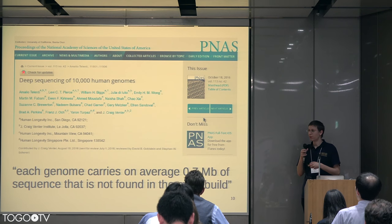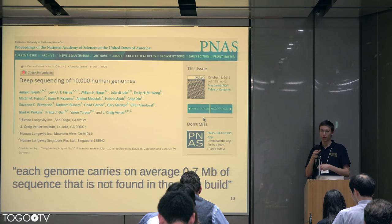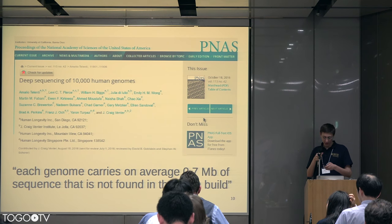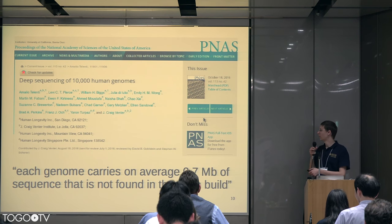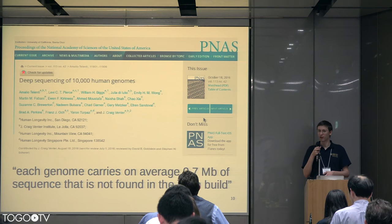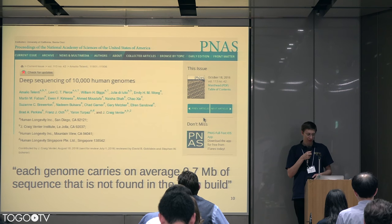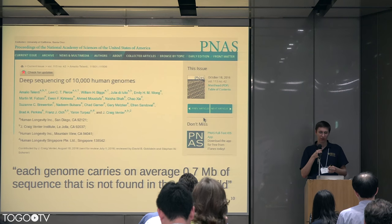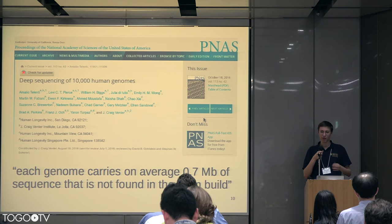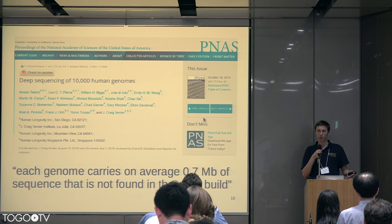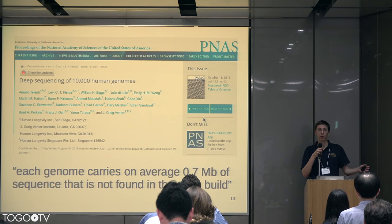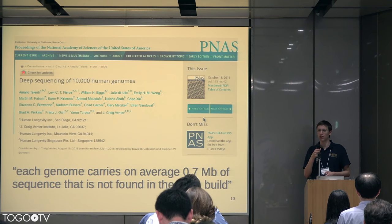Here's another data point for why we need to incorporate variation. This study, including the very famous J. Craig Venter, concluded that on average each genome that you sequence carries about 0.7 megabases of genomic material that's just not in the primary assembly — the linear reference. And that material can be getting ignored.